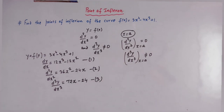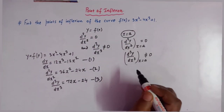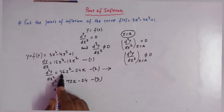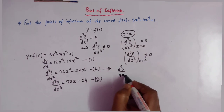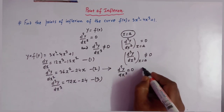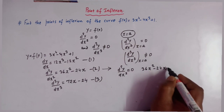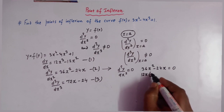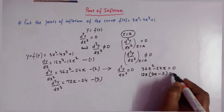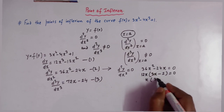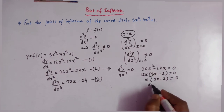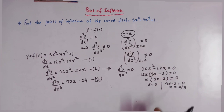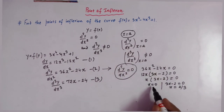The necessary condition for the point of inflection is that the second derivative must equal zero. Setting d²y/dx² = 0 gives us 36x² - 24x = 0. Factoring out 12x, we get 12x(3x - 2) = 0, so x = 0 and 3x - 2 = 0, giving x = 2/3. We have obtained two values of x: x = 0 and x = 2/3.